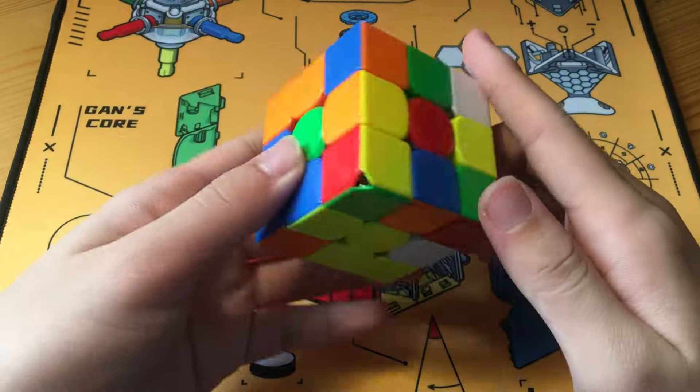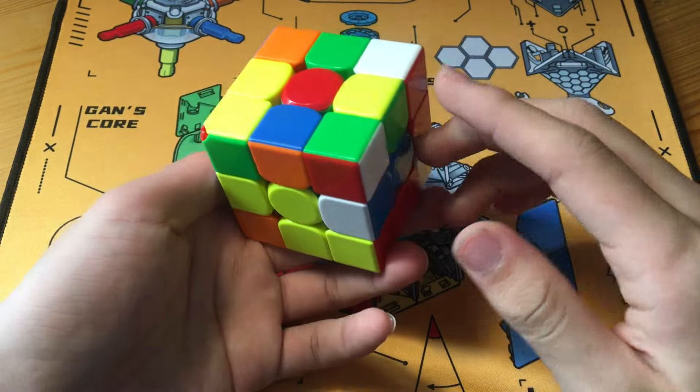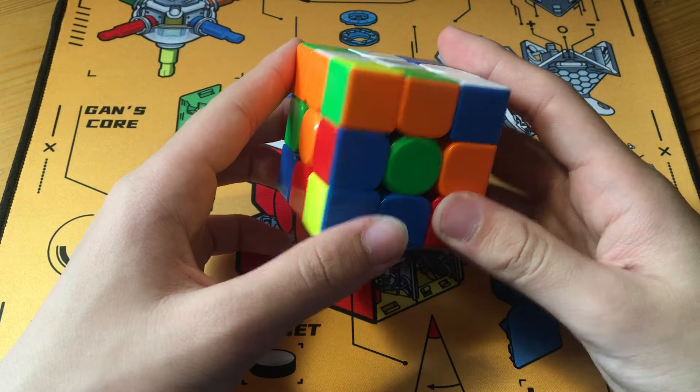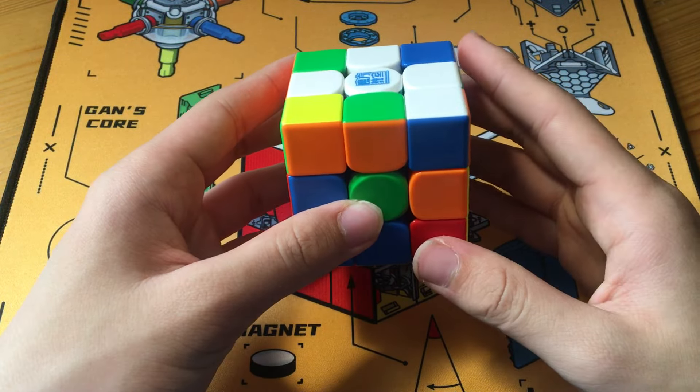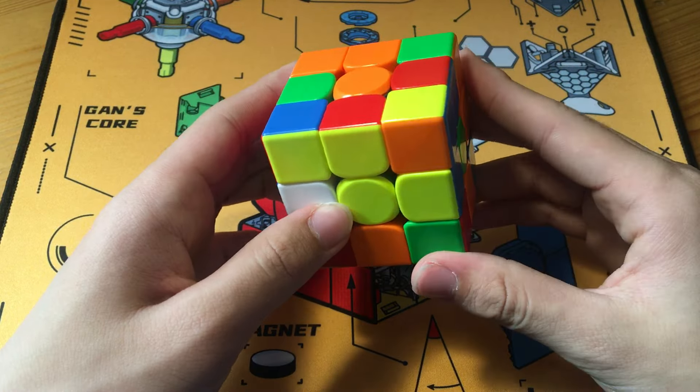The first solve is the 3.66. Kyle's gonna go for yellow cross here. His cross pieces are here, here, here, and here. And he's just gonna go for a very quick cross.